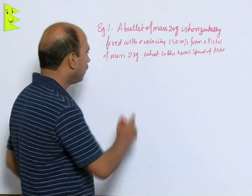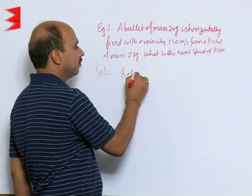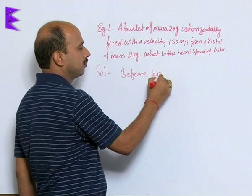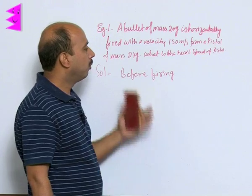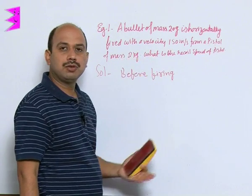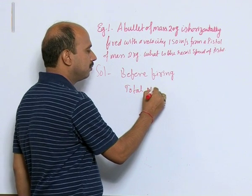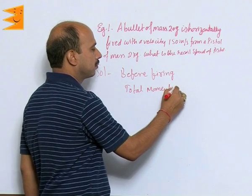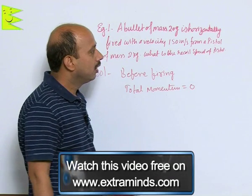Before firing, what is their momentum? Both objects - bullet and pistol - are at rest. So, we can write: total momentum equals 0. This is before firing.